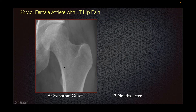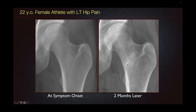In some cases, such as in this 22-year-old female, the left hip demonstrates no sclerosis and is normal. Two months later on follow-up imaging, we can see a band of sclerosis consistent with stress fracture.